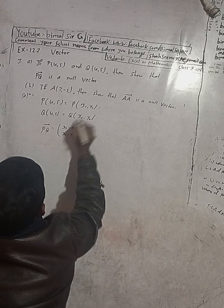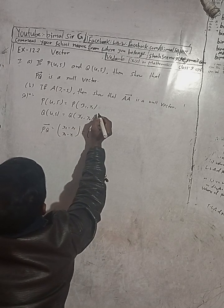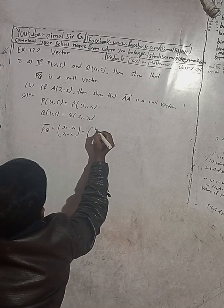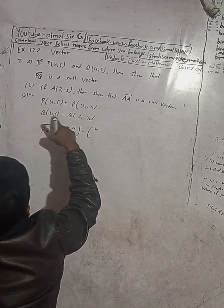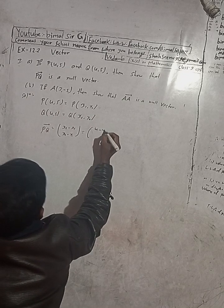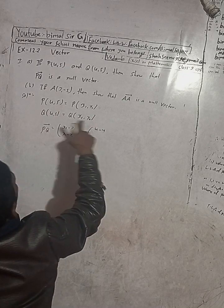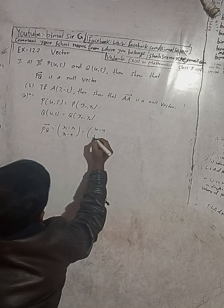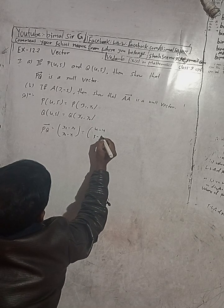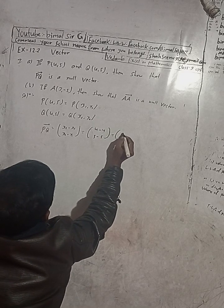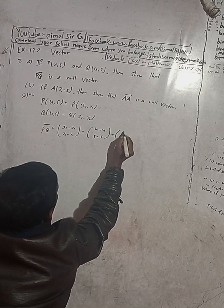So x2 is 4, x2 minus x1 is 4 minus 4, and y2 minus y1 is 5 minus 5. So PQ vector is equal to (0, 0).